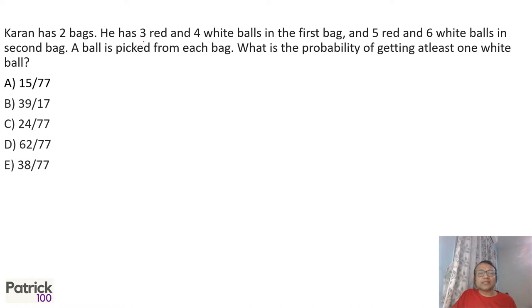Current has two bags. Three red and four white balls in the first bag, five red and six white balls. Probability of getting at least one white. When you say at least one, one way of solving is total ways minus zero white balls.